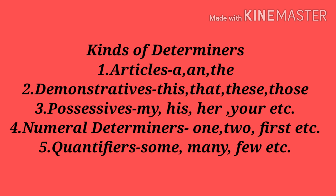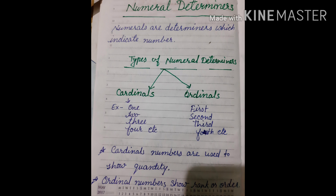Numeral determiners are determiners which indicate the number of a noun. There are two types of numeral determiners: cardinals and ordinals. Cardinals are one, two, three, four, etc., and ordinals are first, second, third, fourth, etc.